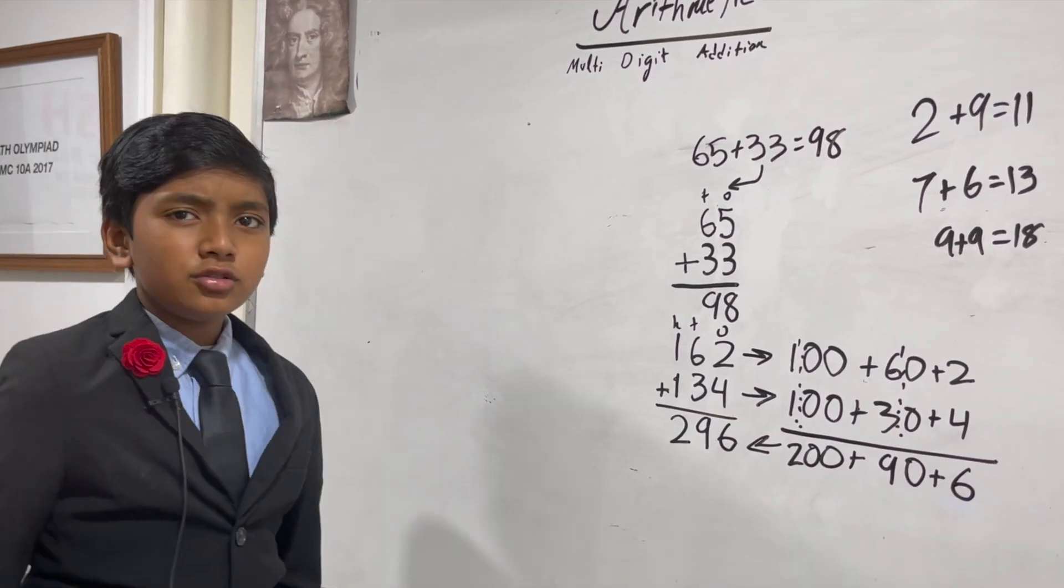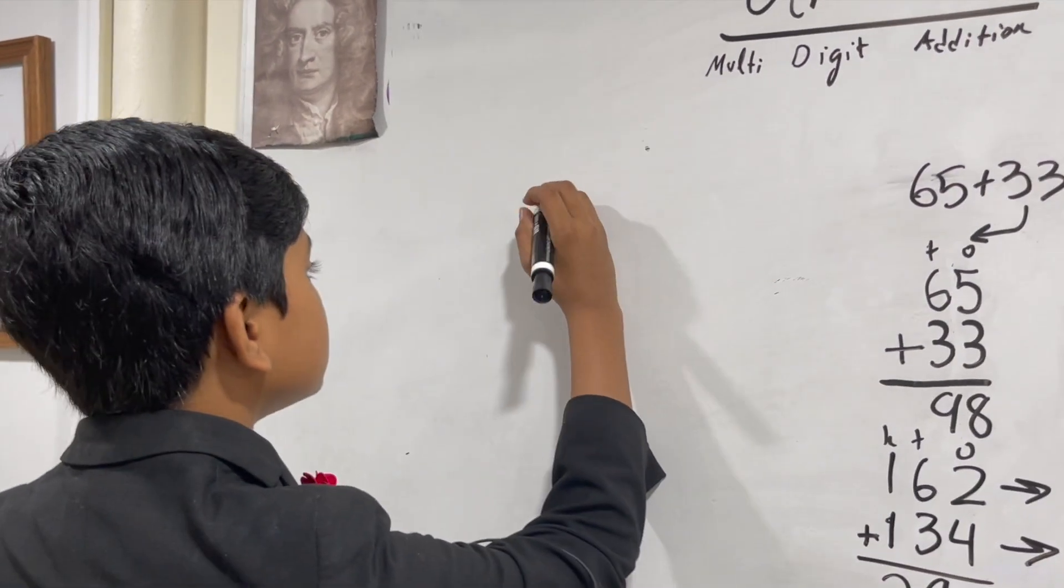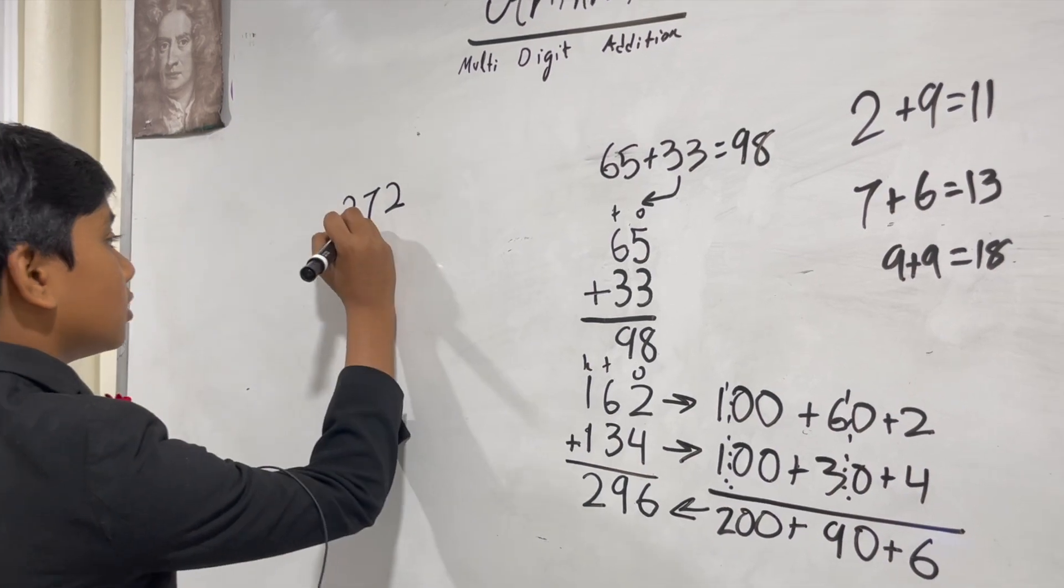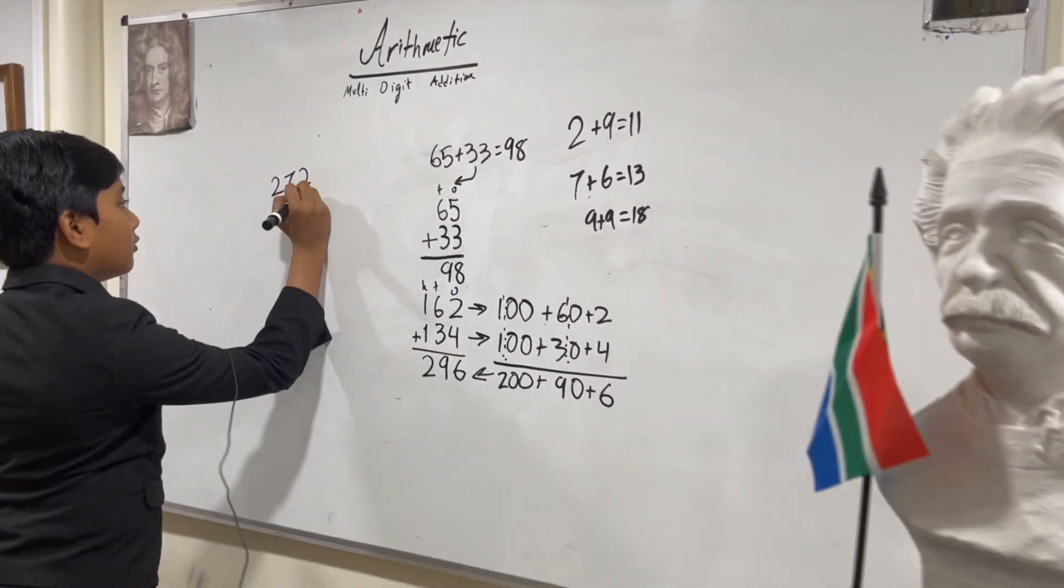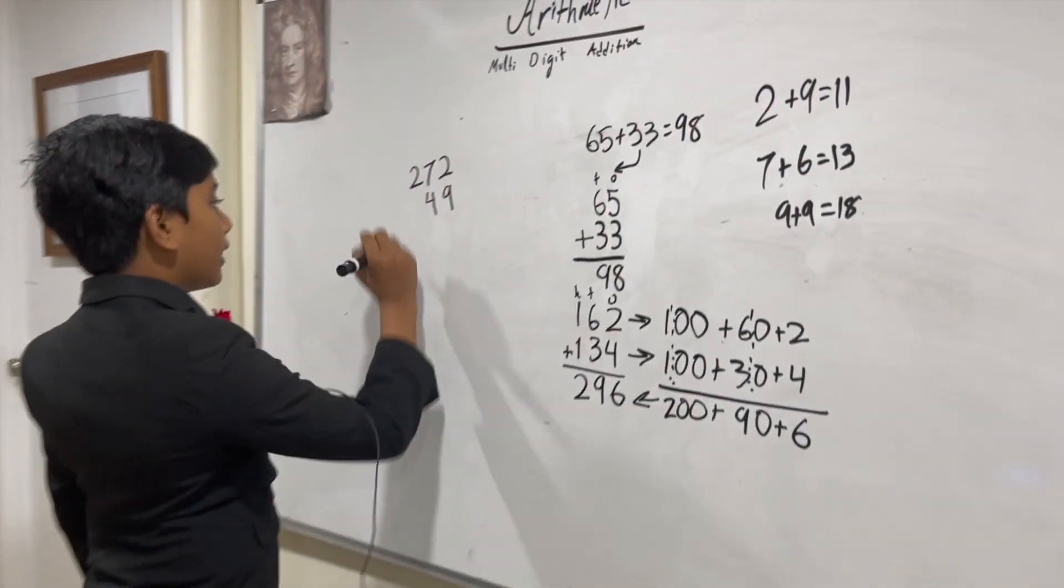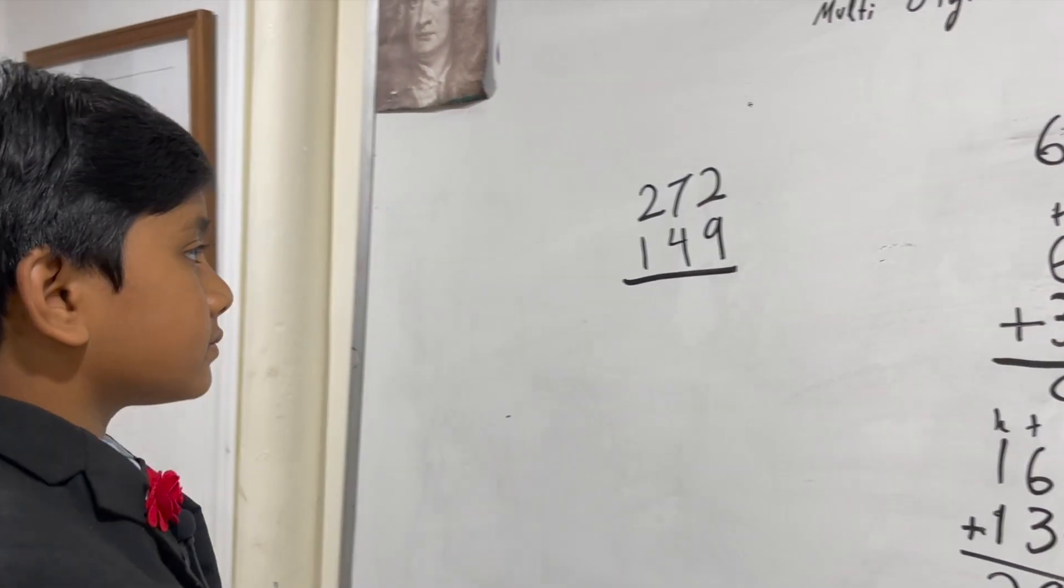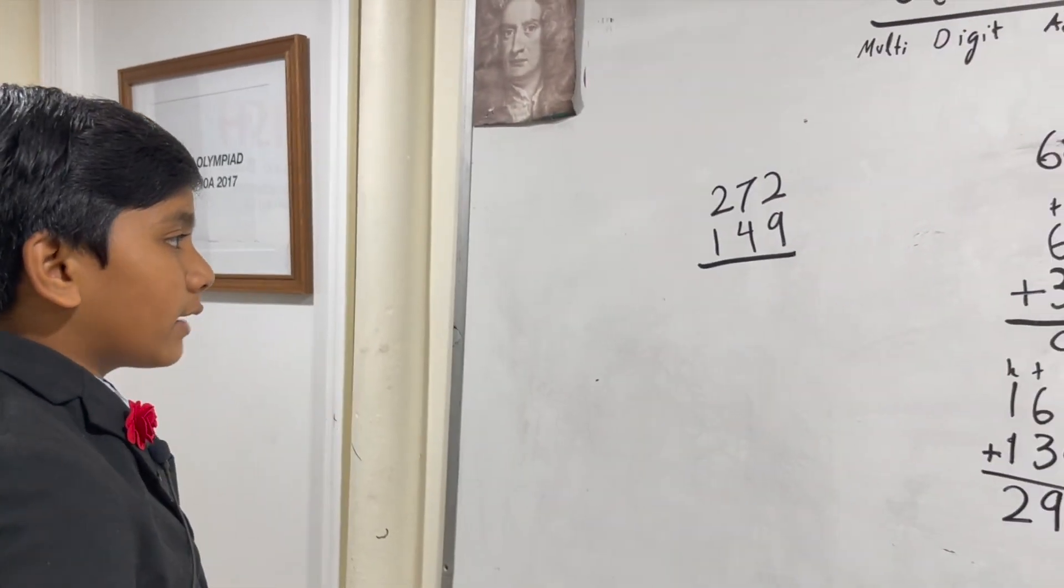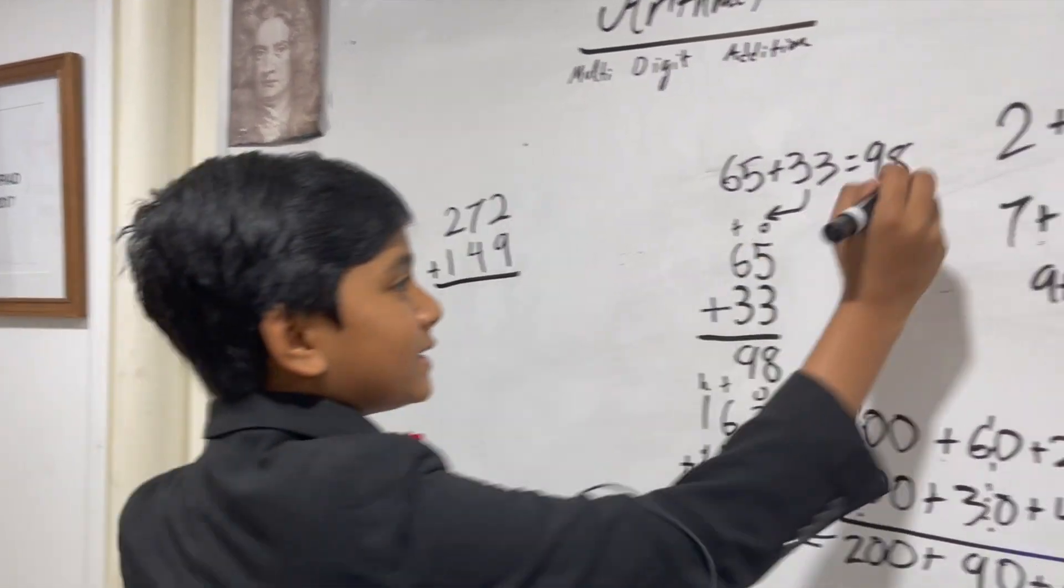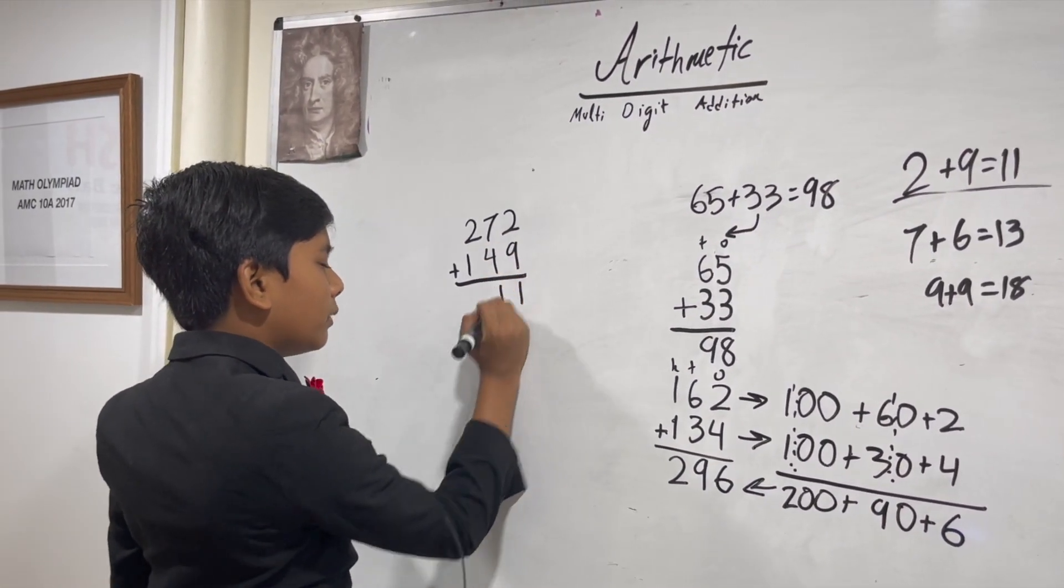Okay, now let's do one that's a little more tricky. Why don't we do something like 272 and 149? Okay, so 272 and 149. Okay, so 2 plus 9, that's easy, you mentioned this earlier, in fact it's 11. But wait a second...